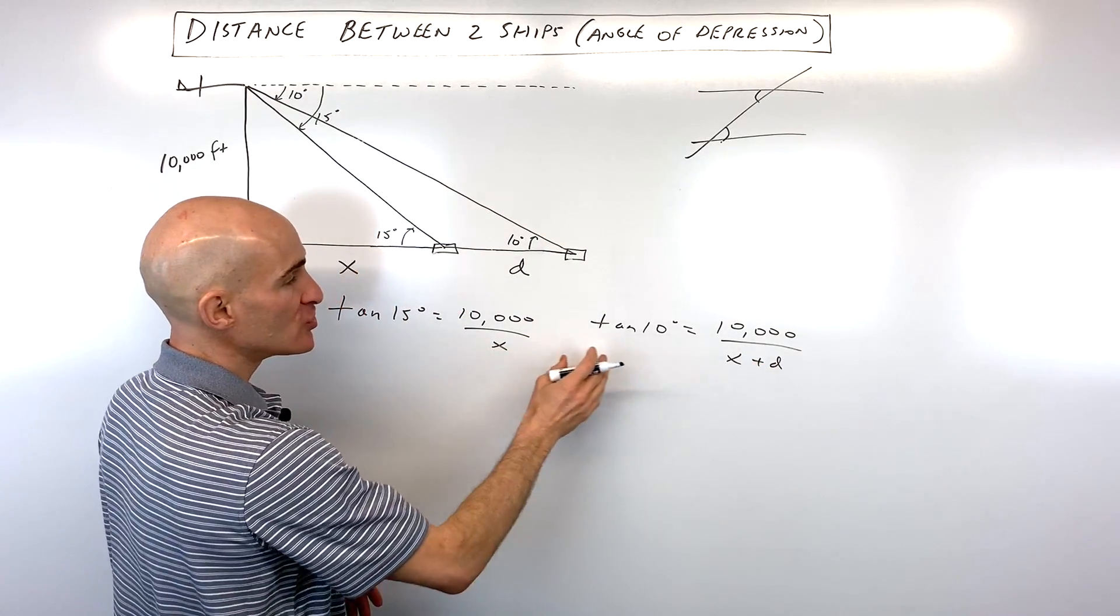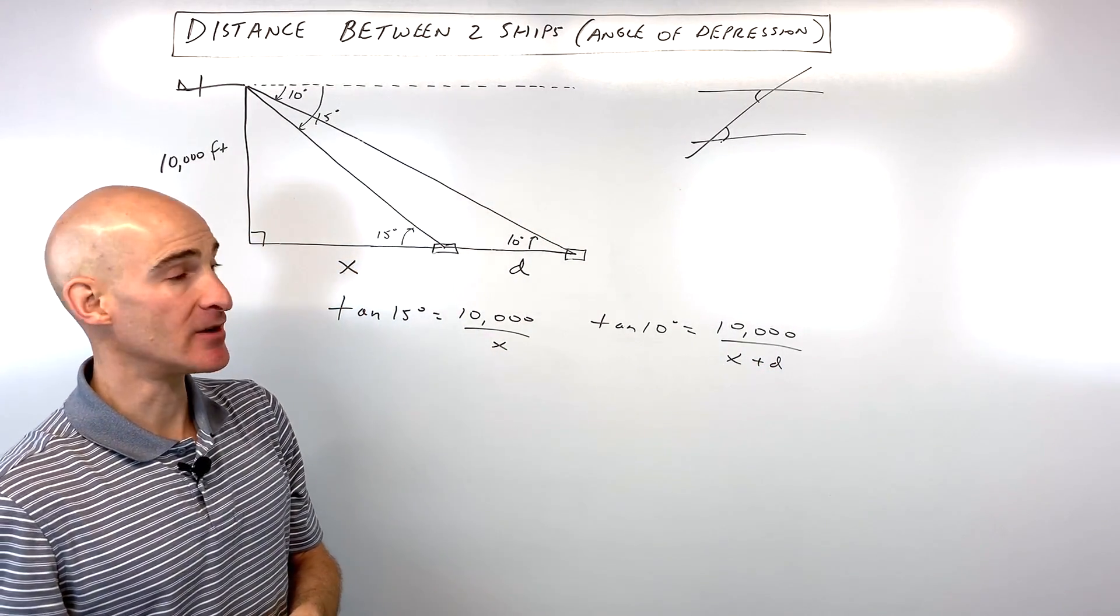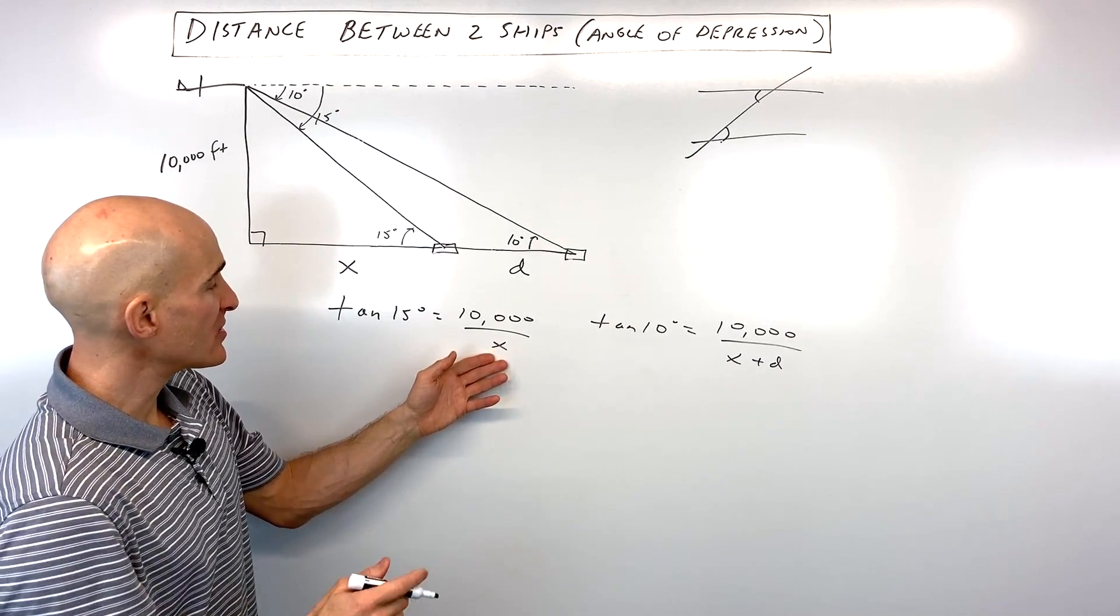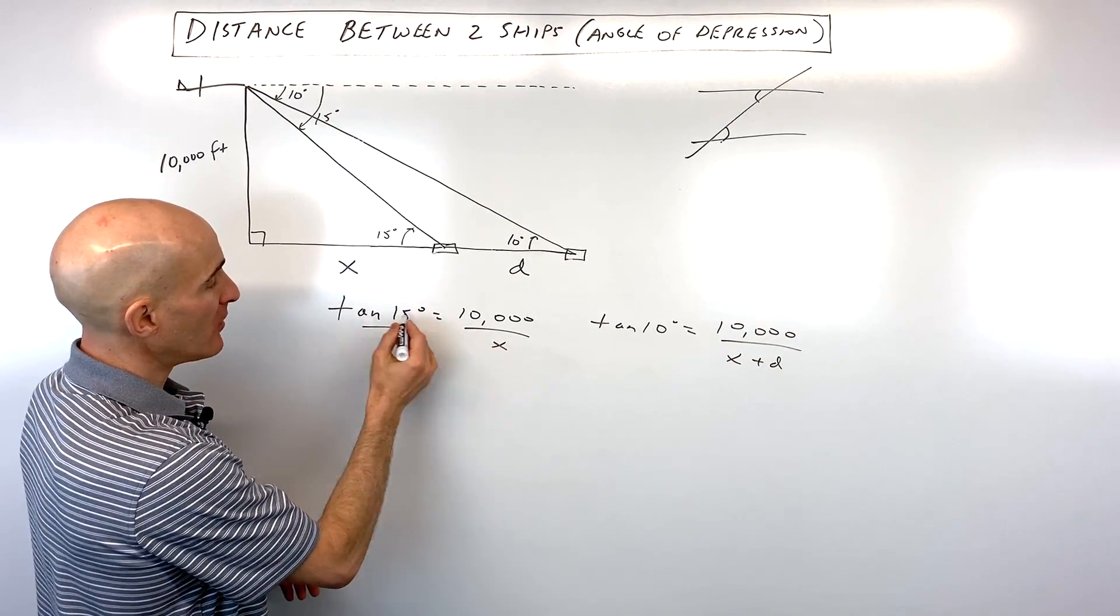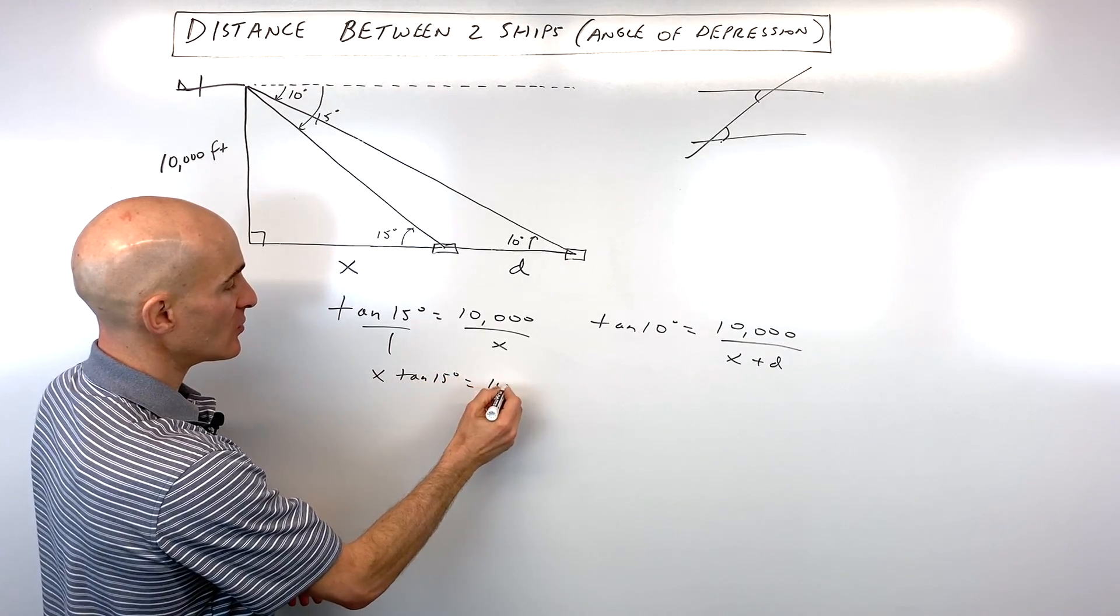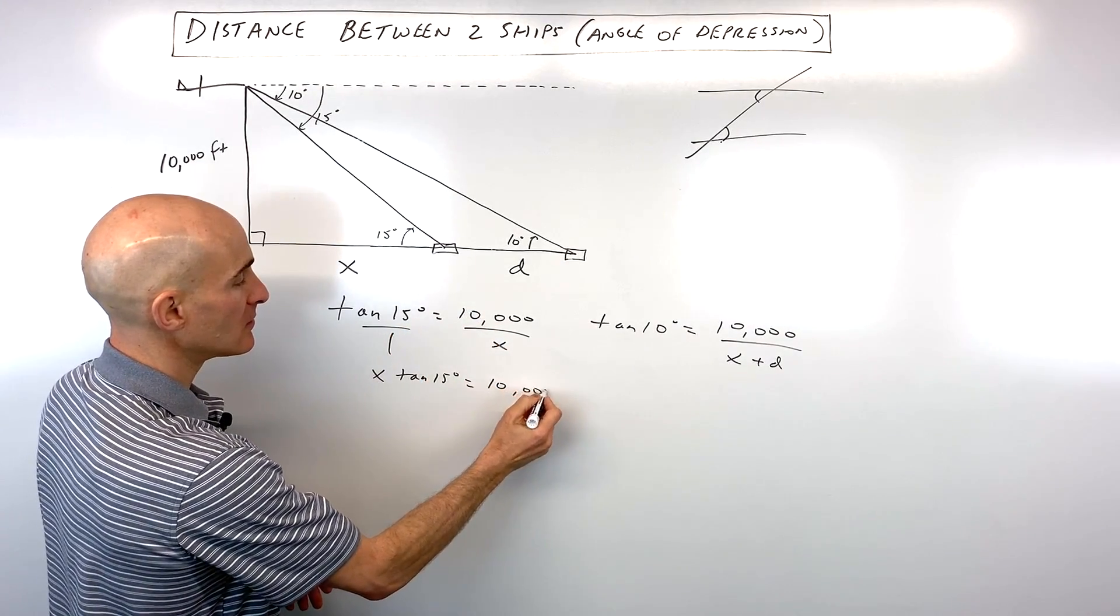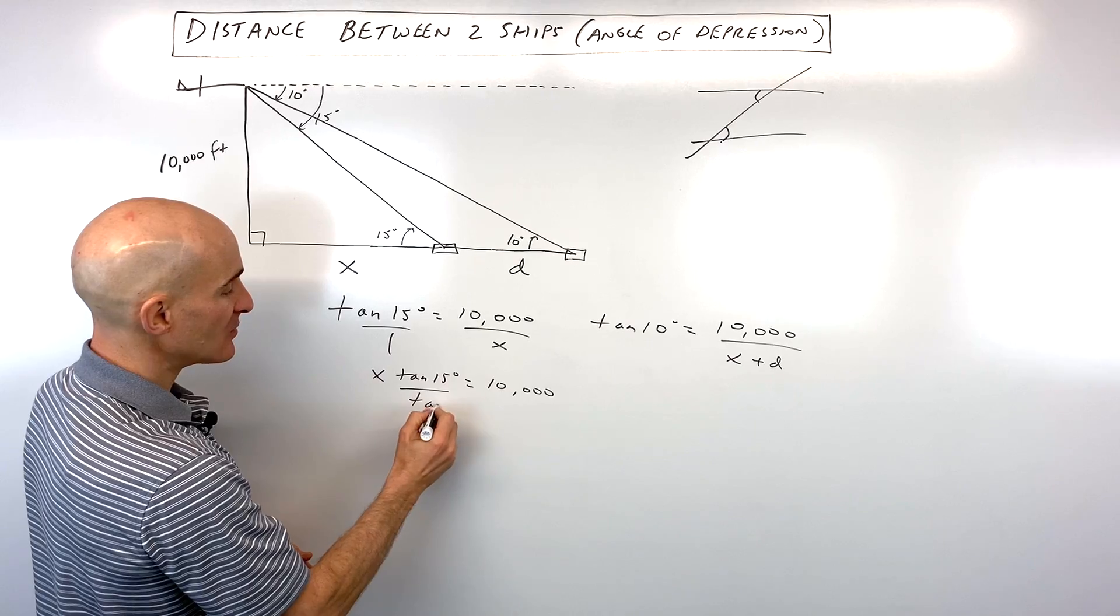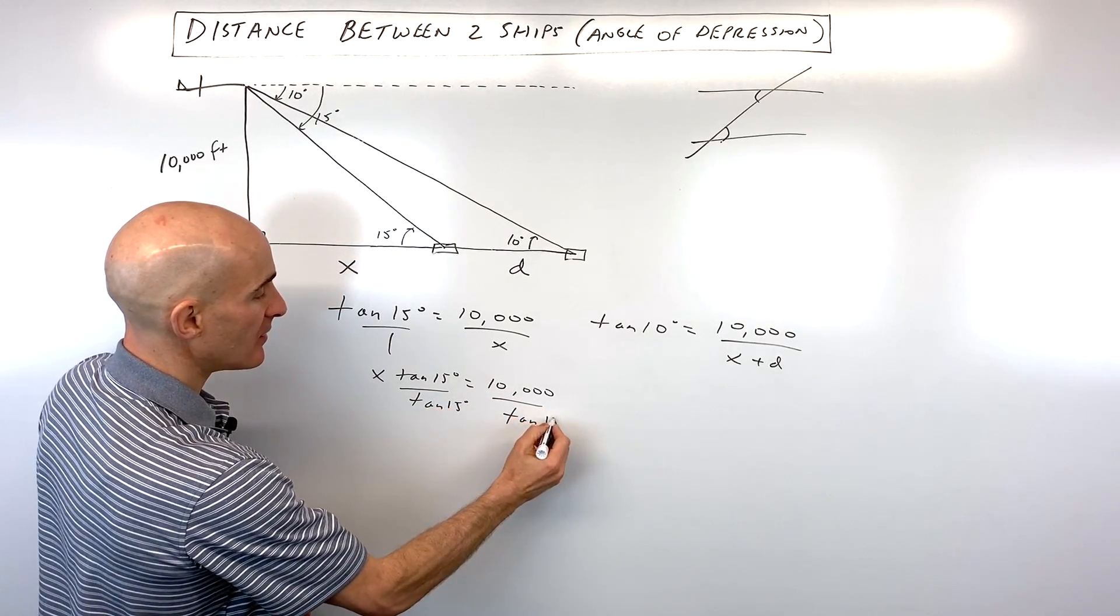Now we have our two equations, our two variables, so we can solve the system. So what I'm going to do here is I'm going to cross multiply. So I'm going to say x times tangent of 15 degrees equals 10,000 times 1. And then I'm going to divide both sides of the equation by tangent of 15 degrees to get x by itself.